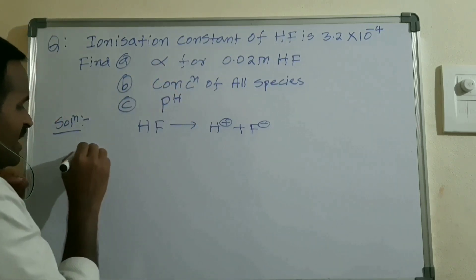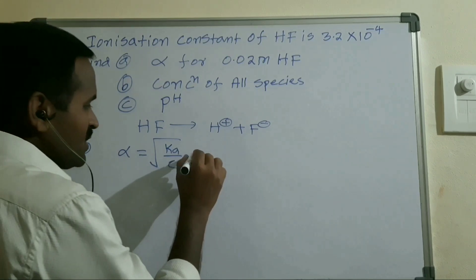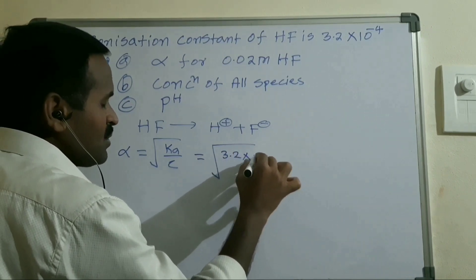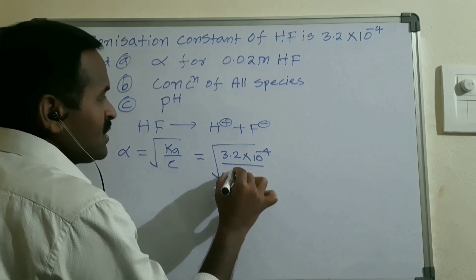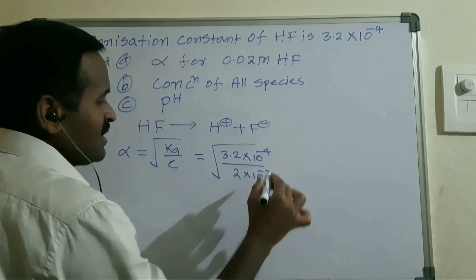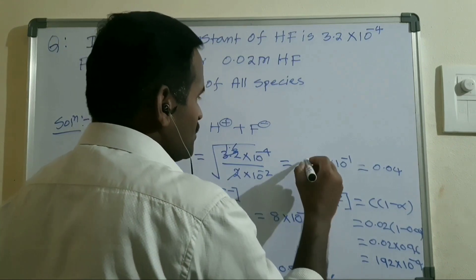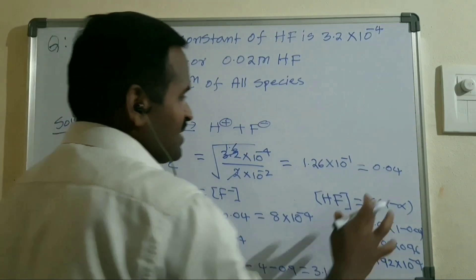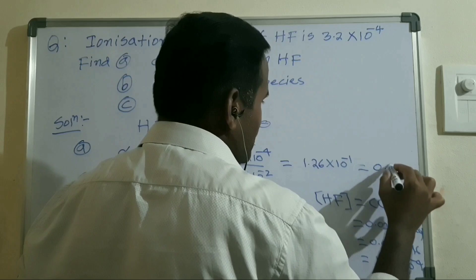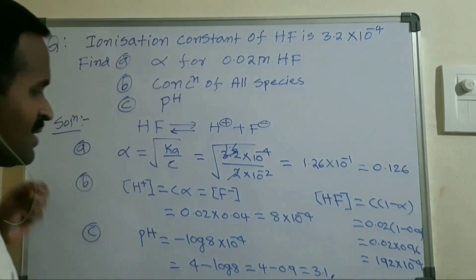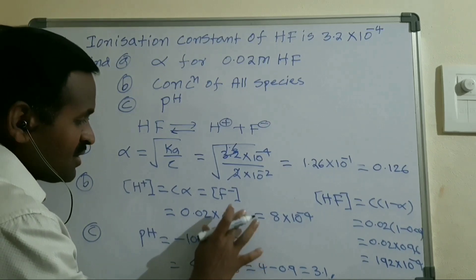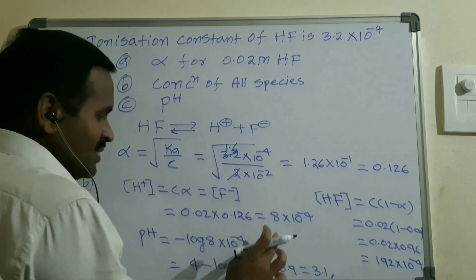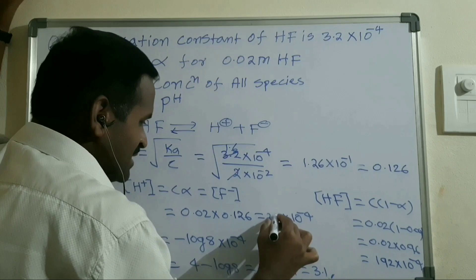Using the formula α = √(Ka/C), with Ka = 3.2 × 10⁻⁴ and concentration C = 2 × 10⁻², we get α = √(3.2 × 10⁻⁴ / 2 × 10⁻²) = √(1.6 × 10⁻²). The square root of 1.6 is approximately 1.26, so α ≈ 0.126.